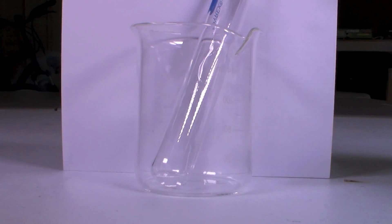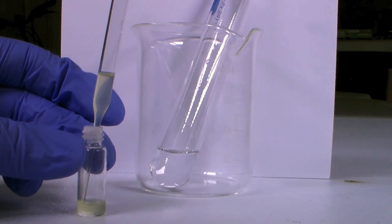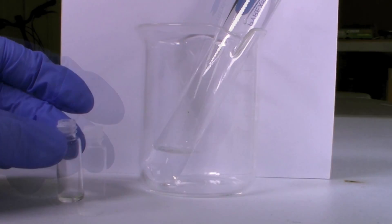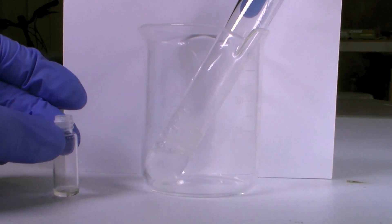I first add a couple milliliters of water to a test tube and then I use a pipette to add the silicon tetrachloride to the test tube. You can see the yellow color quickly disappearing as the silicon tetrachloride is destroyed by the water.